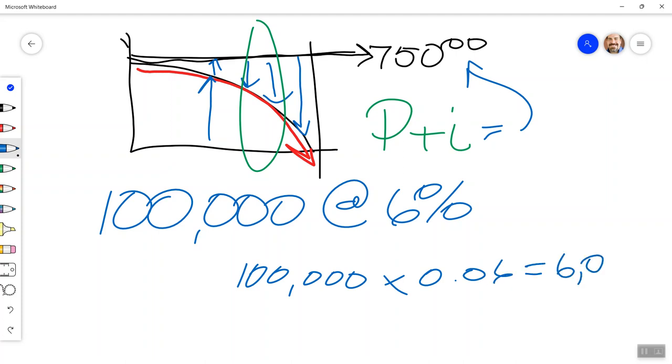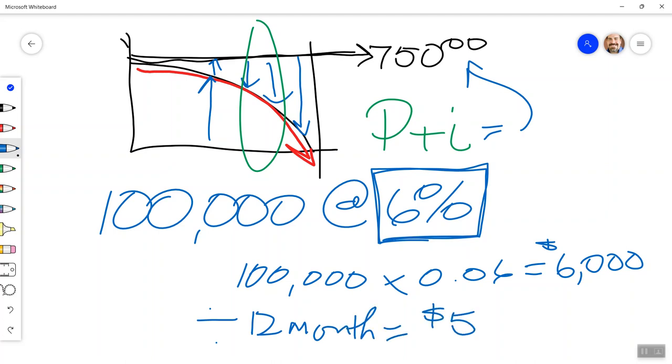That means I would have paid $6,000 a year. Because remember, this is an annual number. So that means I would pay $6,000 a year. Well, if you divide that by 12 months in a year, you get that each month I pay $500 of interest.